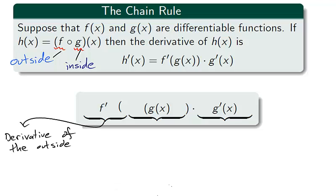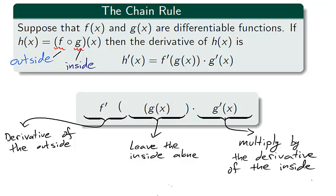And the chain rule can be described as taking the derivative of the outside, being sure to leave the inside alone, and then you multiply by the derivative of the inside.